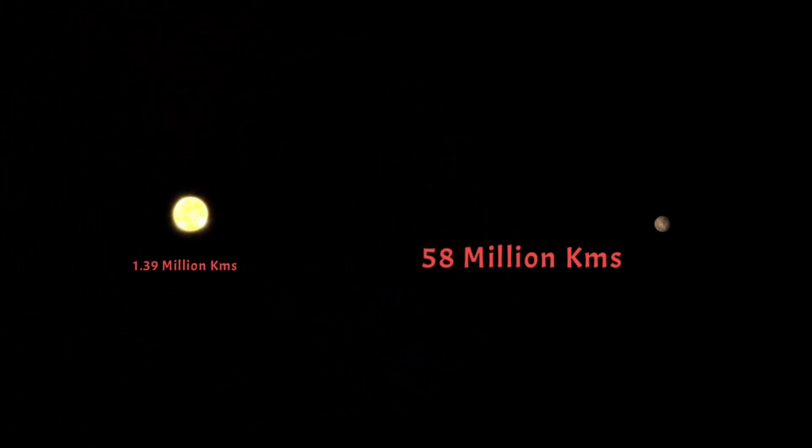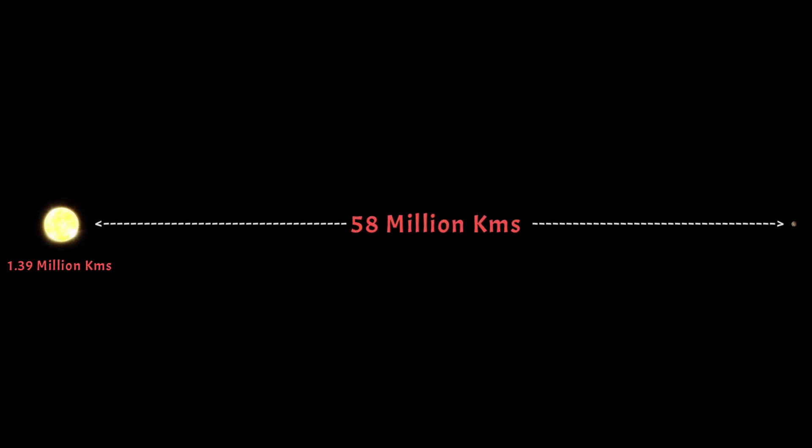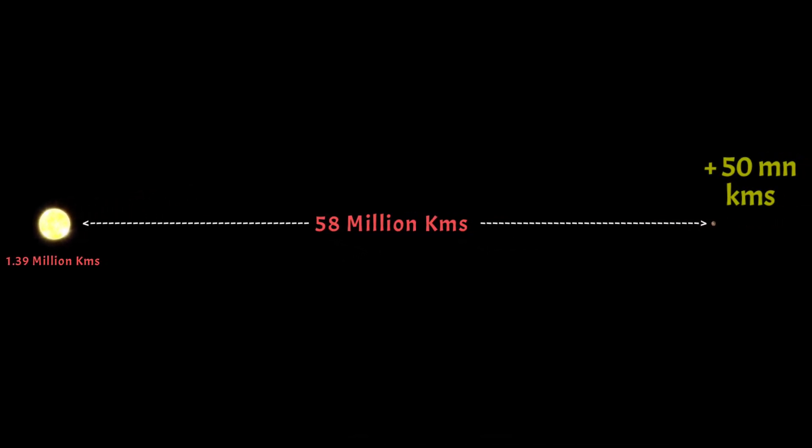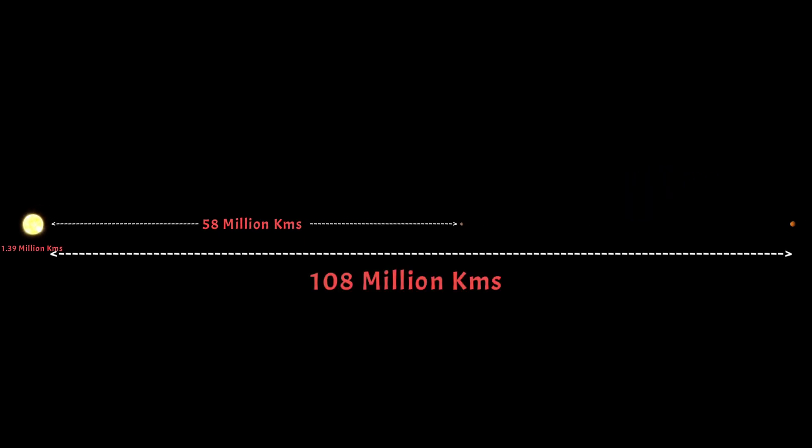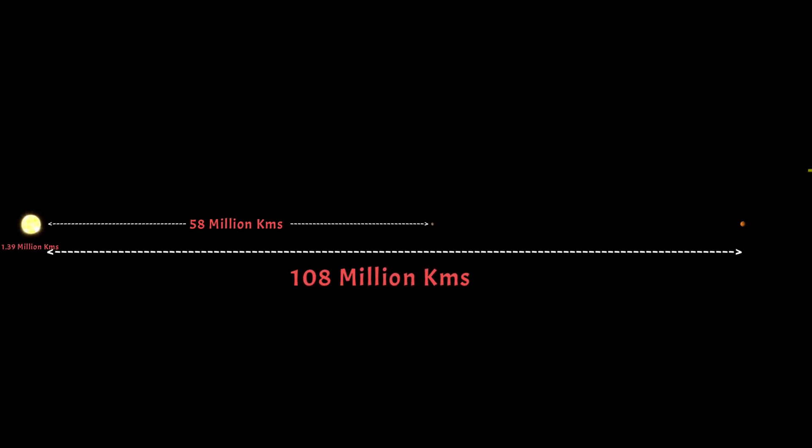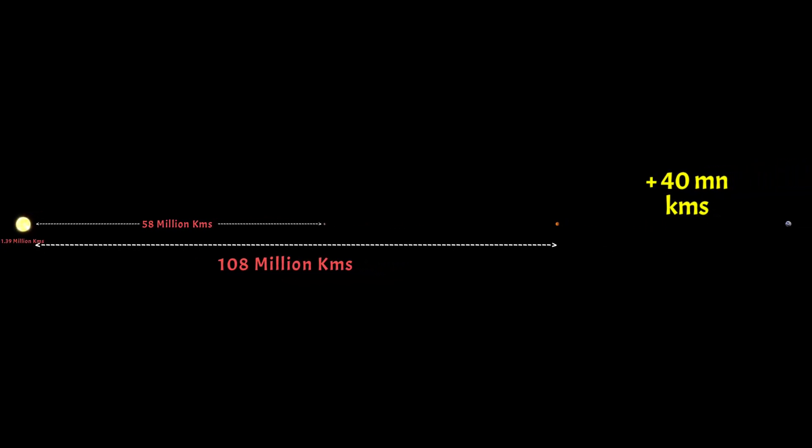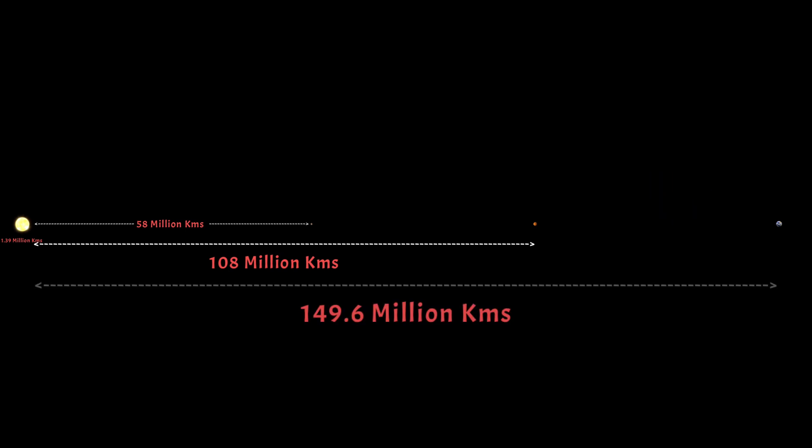Mercury will be far, far farther. Now Venus is another 50 million kilometers away, that's a distance of 108 million kilometers from the Sun. Add another 40 million kilometers and you get to Earth. Earth is 149.6 million kilometers from the Sun.